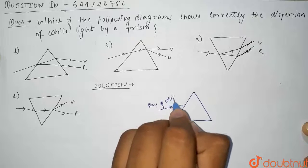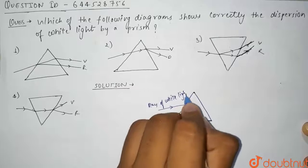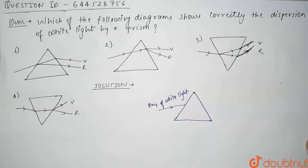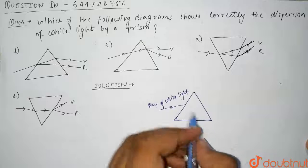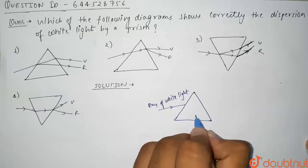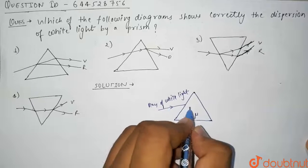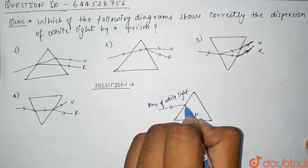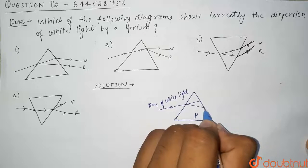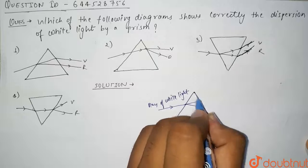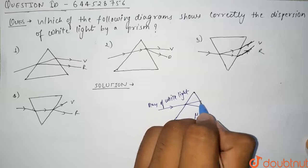Then the dispersion starts from here onwards because if the refractive index of this prism is μ, then the value of μ is different for different colors of light. So here it will get refracted and it will be something like this. And then after refracting one more time from this surface, it will come like this.